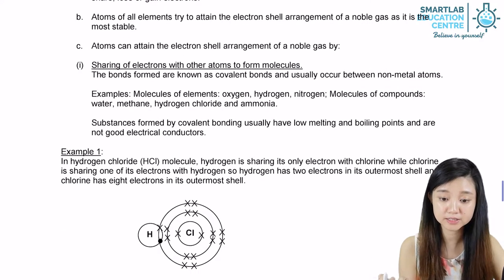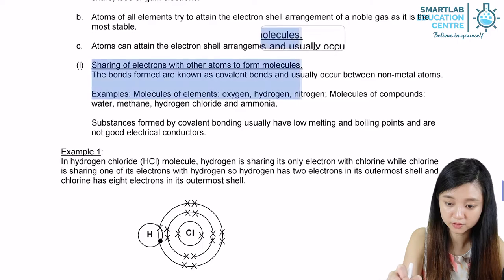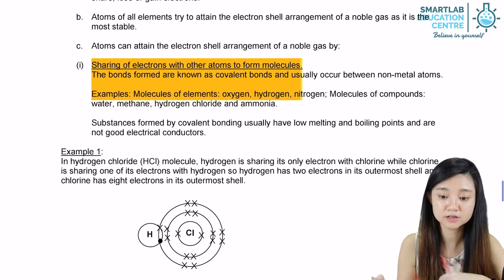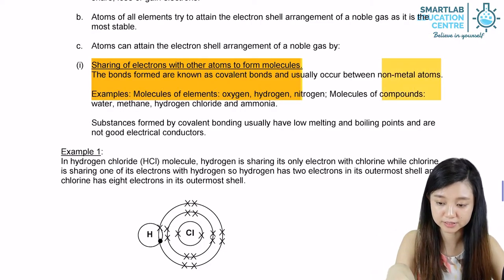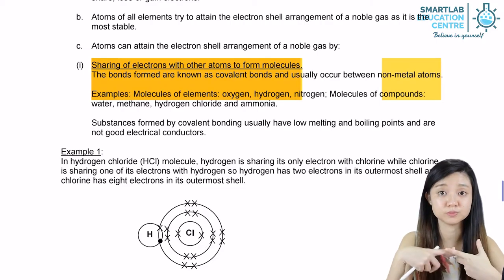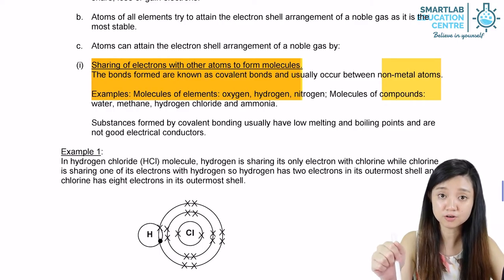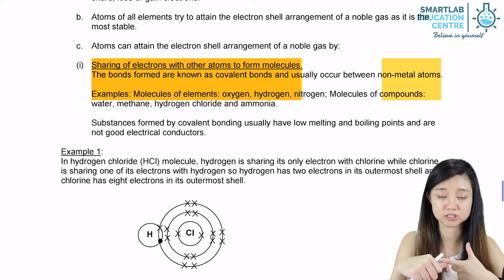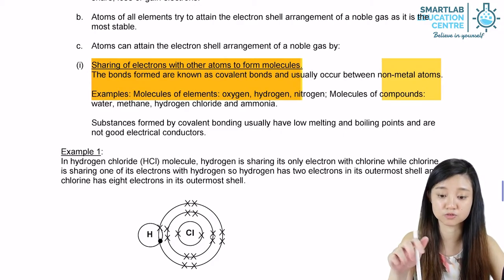When an atom attains the electron shell arrangement of a noble gas by sharing electrons, we call the bond a covalent bond, and this usually occurs between 2 non-metal atoms. For example, we have water H₂O — H being a non-metal and O also being a non-metal. We have methane CH₄ — carbon is a non-metal and H is a non-metal. Hydrogen chloride and ammonia are all examples of covalent bonding.